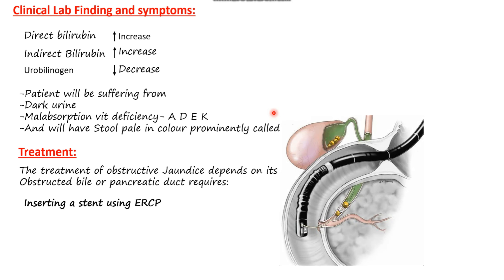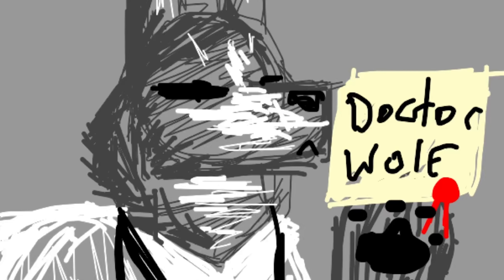Regarding treatment of obstructive jaundice, surgical treatment is used to remove any obstruction, whether a gallstone or carcinoma. A stent can be placed using ERCP (endoscopic retrograde cholangiopancreatography). You can support me by subscribing to my channel, giving a thumbs up, and leaving any questions in the comment section.